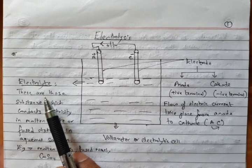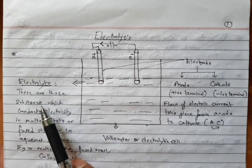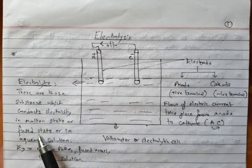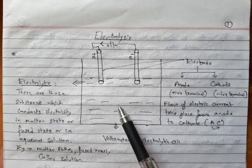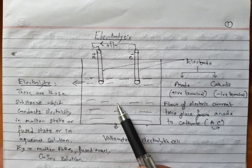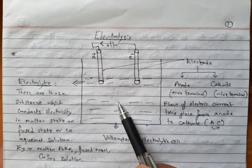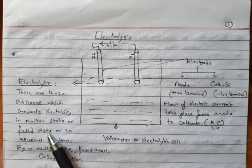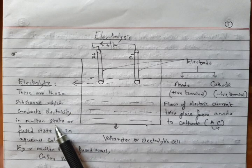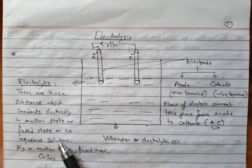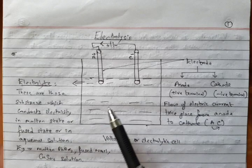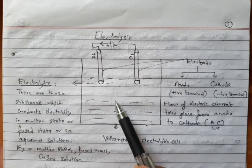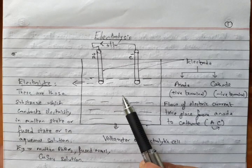So what is an electrolyte? These are those substances which conduct electricity in molten state, fused state, or in aqueous solution. Molten state means molten form. Fused state means powdery form. Aqueous solution means when you add water to it. So electrolytes are those substances which conduct electricity in molten state, fused state, or in aqueous solution.